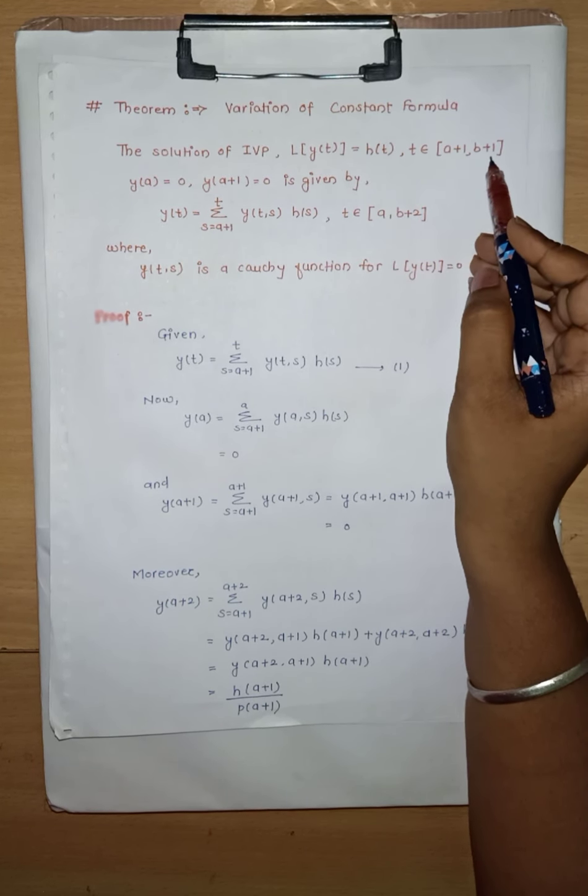Now we will see the proof. What is given? We have given that y(t) is the solution of L[y(t)] = h(t). So we write y(t) = summation over s from a+1 to t of y(t,s) * h(s), and we give it equation number 1. We are also given two conditions: y(a) = 0 and y(a+1) = 0.